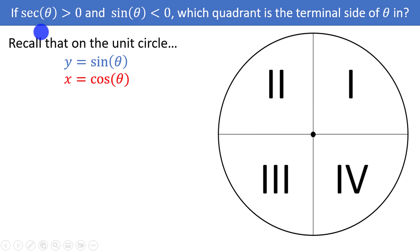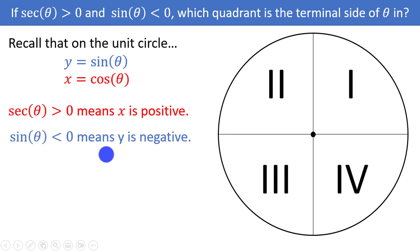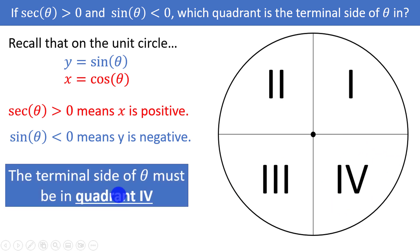Let's try one final problem. If secant is greater than zero and sine is less than zero, which quadrant is the terminal side of theta in? Recall that secant is just the reciprocal of cosine — taking the reciprocal does not change the sign. So if secant is positive, cosine is also positive, meaning x is positive, placing us in quadrant 1 or 4. If sine is less than zero, y is negative, placing us in quadrant 3 or 4. The quadrant common to both is quadrant 4. The terminal side of theta must be in quadrant 4. That finishes this video practicing some of the ideas related to the unit circle.